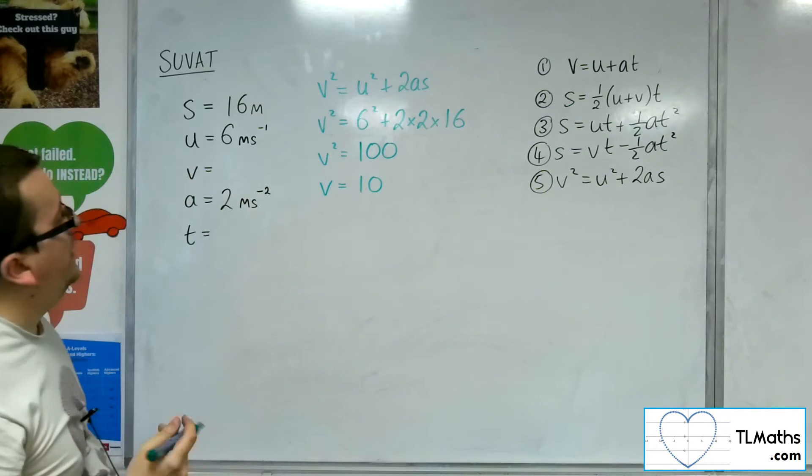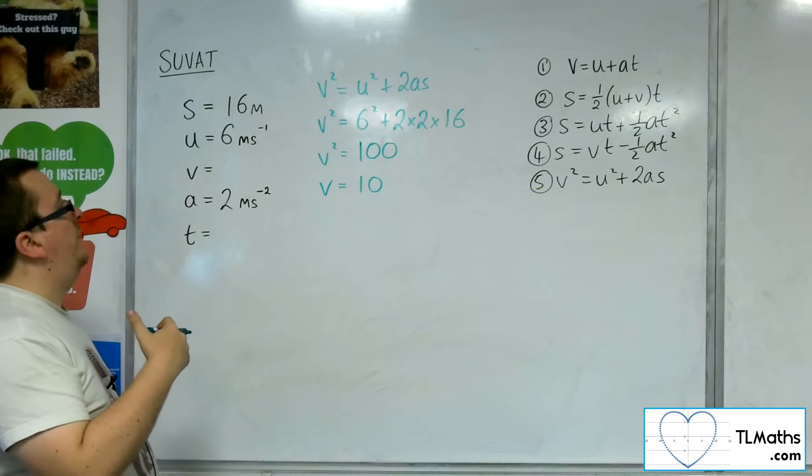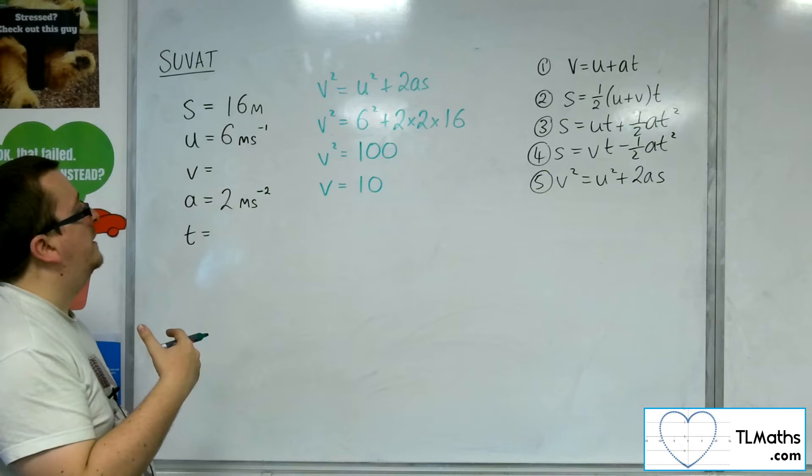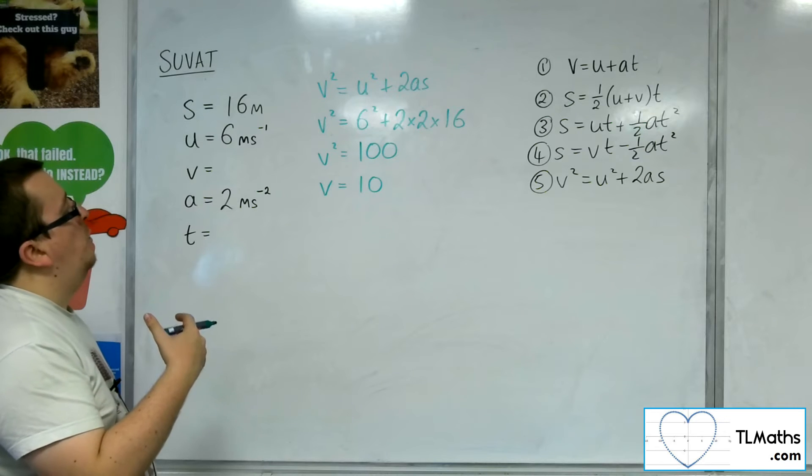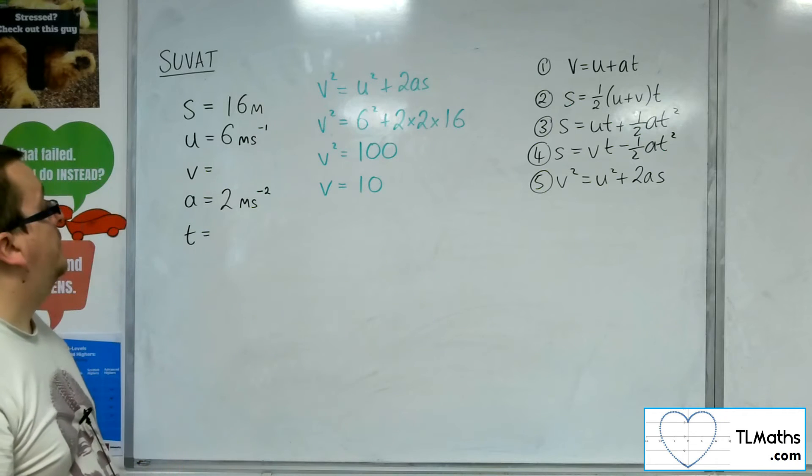Now, you might be thinking, could I also have minus 10 as the final velocity? So what would that mean? That would mean that if I had v as minus 10,